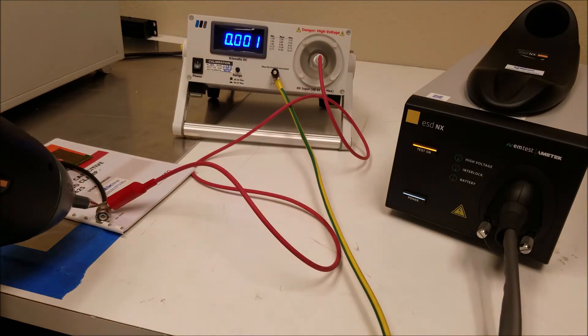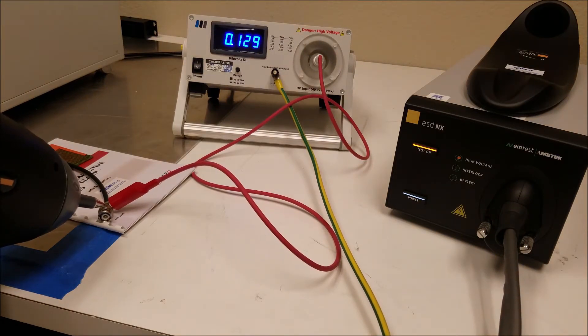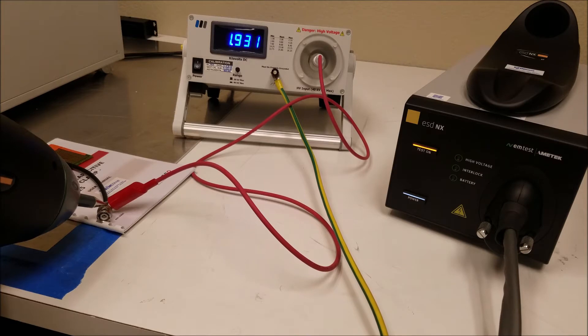The gun is set for 6 kV but the meter will read about half because current is so minimal in ESD generators. Voltage is reduced upon contact.